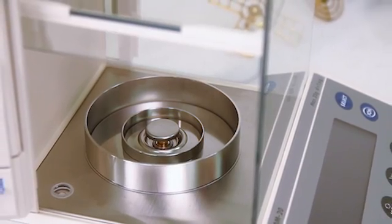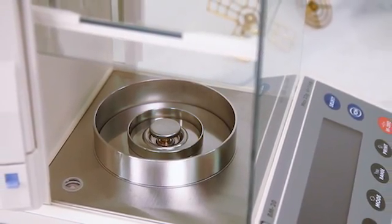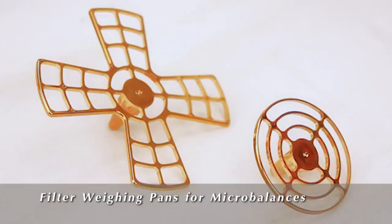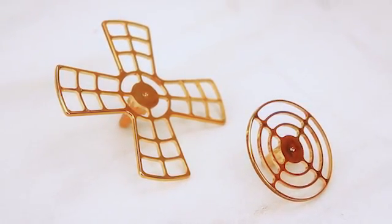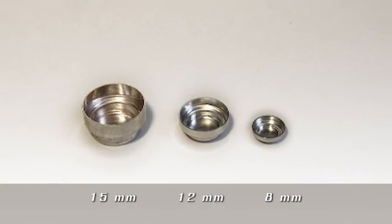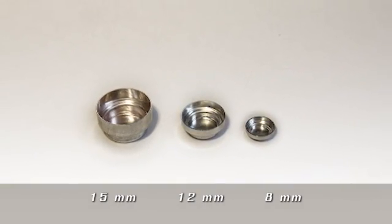The BM20 and BM22 also come with two extra pans, specially designed for filter weighing, and a supply of disposable weighboats in three different sizes.